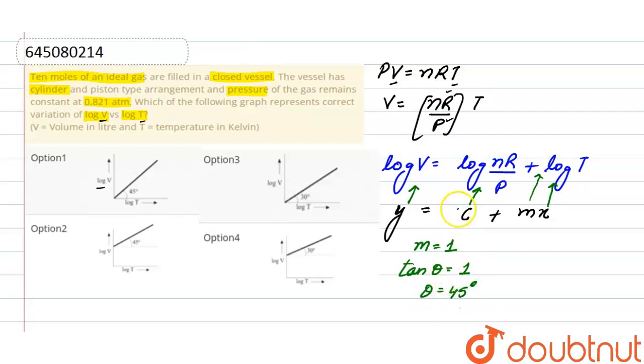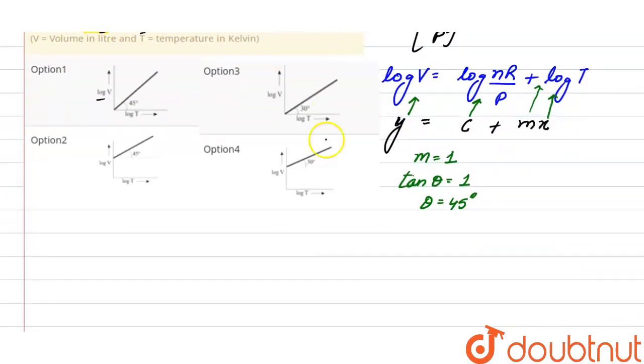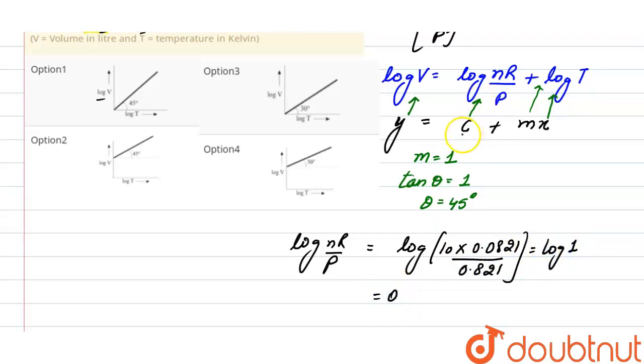Now the intercept is log of nR divided by P. Putting the values: number of moles is 10, R is 0.0821, pressure is 0.821. After solving, it will be log 1, and log 1 equals 0. So the intercept is 0.